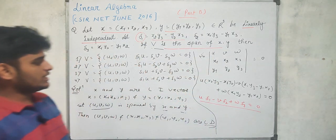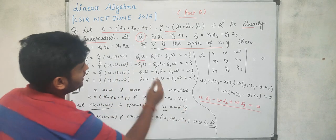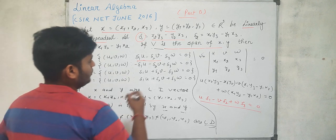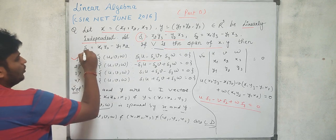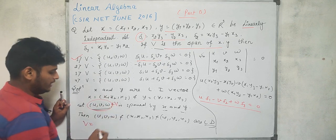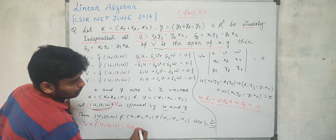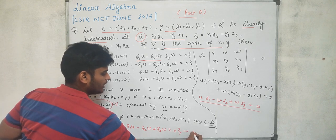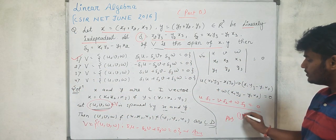From this expression, we check option 1: delta1·U − delta2·V + delta3·W = 0. The sign in our expression is plus for the W term, which matches option 1. So the correct answer is option 1. Since (U, V, W) belongs to V, the condition for V is delta1·U − delta2·V + delta3·W = 0.